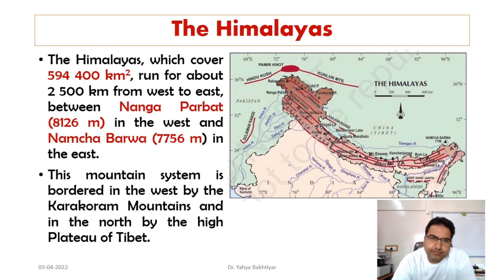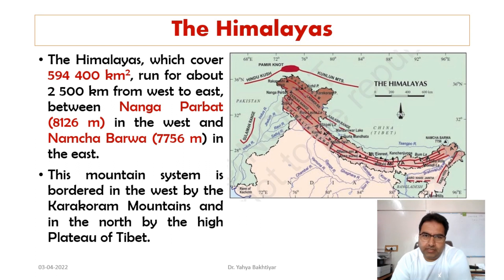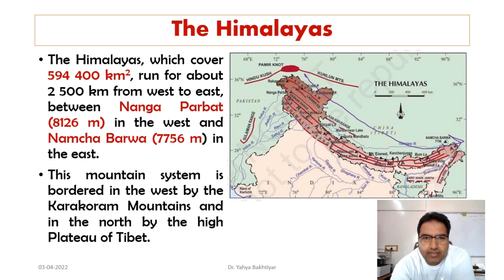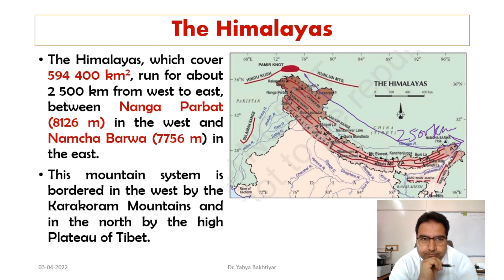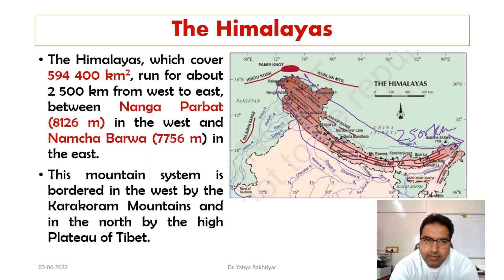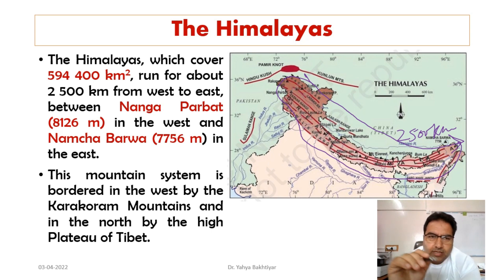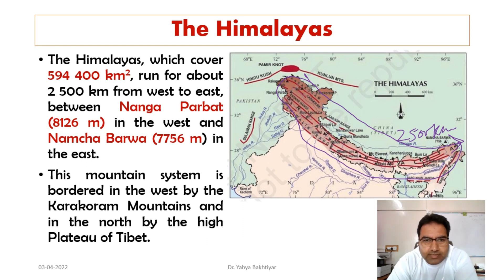The Himalayas cover 5,94,400 square kilometers and run about 2,500 kilometers from west to east. In between, there is Nanga Parbat at 8,126 meters in the west and Namcha Barwa at 7,756 meters in the east — these two are the major mountain peaks of the Himalayas.